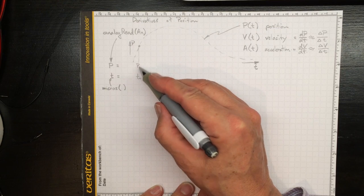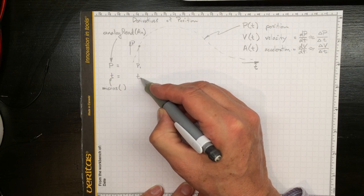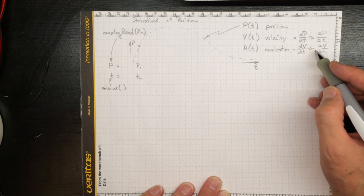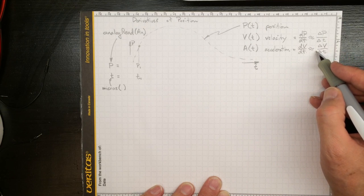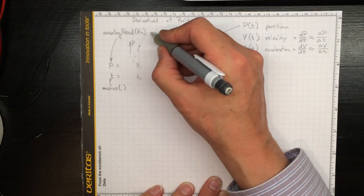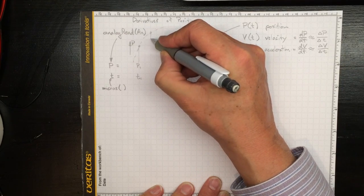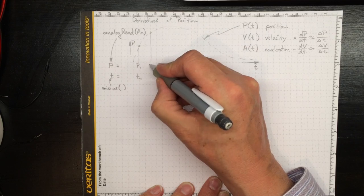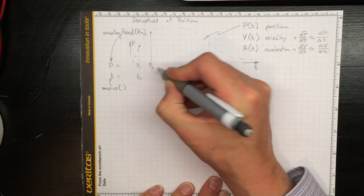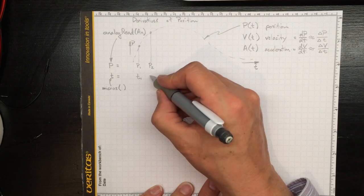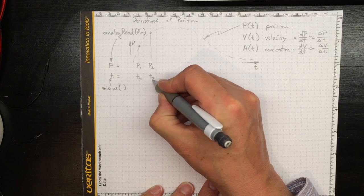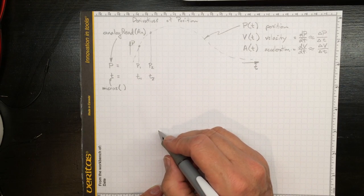Now, all we know is a position and a time, so we really can't even make a guess at velocity and acceleration. But if we wait a little while and take another position measurement, then we can get the position at some later time, too, and the time when we took that second measurement.